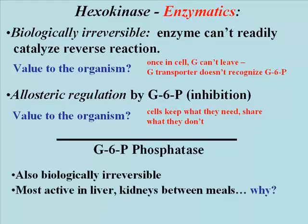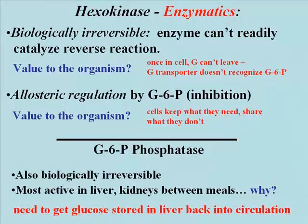Let's consider glucose 6-phosphate phosphatase again. This reaction is also biologically irreversible, and the enzyme is only active in the liver between meals. Between meals, it's necessary to mobilize stored glucose in the liver — that would be glycogen — and glucose 6-phosphate phosphatase is part of this process, catalyzing the removal of the phosphate group so that glucose can cross the cell membrane by binding to the glucose transporter protein, allowing glucose to exit the liver and be transported to other tissues that need glucose for energy.